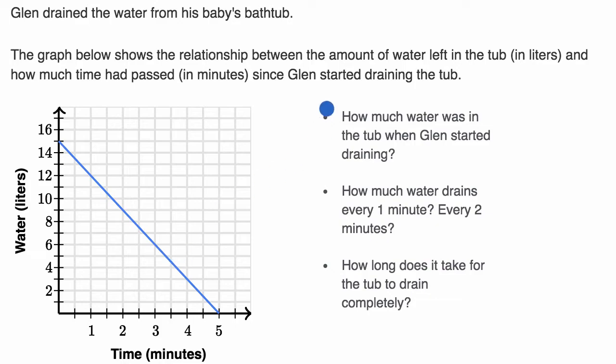All right, now let's do it together. Let's start with this first question. How much water was in the tub when Glenn started draining? So what we see here is, when we're talking about when Glenn started draining, that would be at time t equals zero.